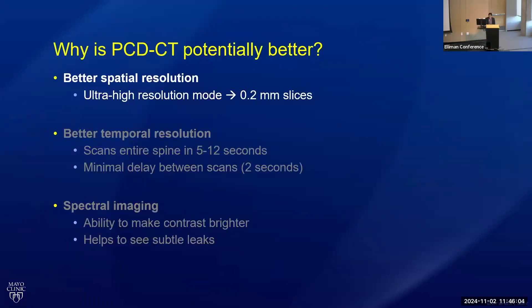There are really three main things that help with regard to myelography. Probably the single biggest one is that photon counting CT gives us better spatial resolution. We can create thinner imaging slices down to 0.2 millimeters, compared to about 0.6 millimeters on most traditional scanners.